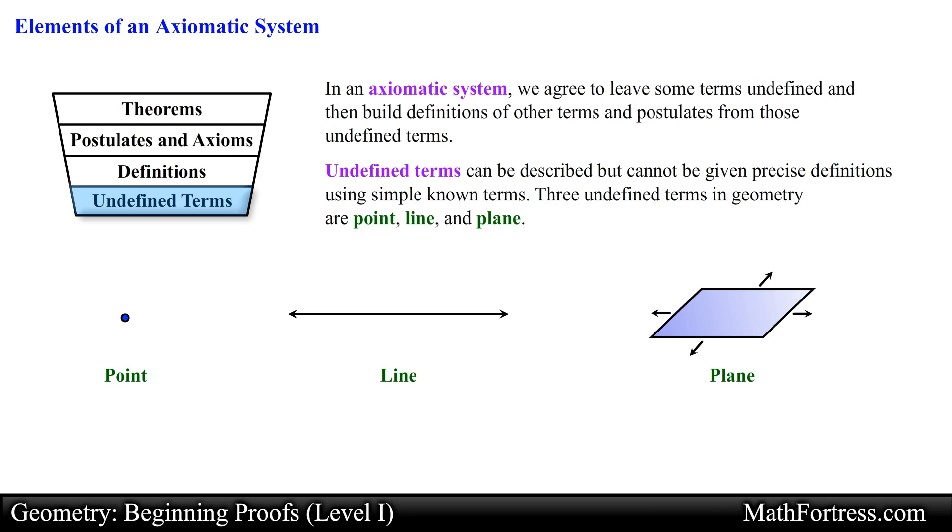A plane is a sheet of paper formed by an infinite number of points with no thickness and extending infinitely in all directions. Although a plane has no edges we usually picture a plane by drawing a four-sided figure. We often label a plane with a capital letter. These descriptions provide a way for us to visualize points, lines, and planes but they are not definitions.